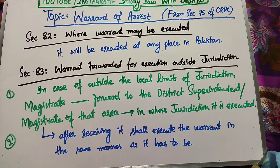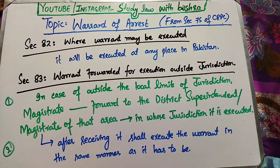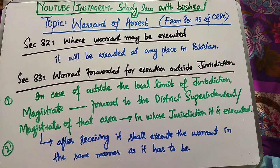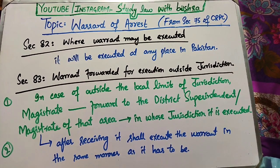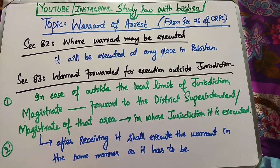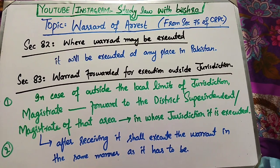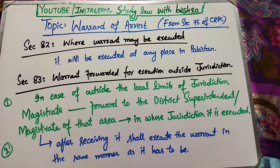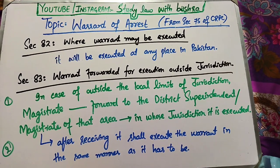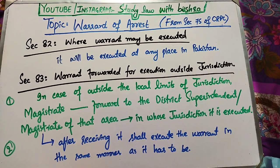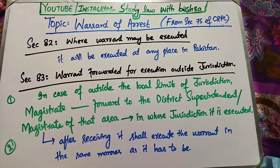Section 83 میں بتایا گیا ہے کہ اگر وہ بندہ magistrate کی jurisdiction میں نہیں ہے تو وہ magistrate اس علاقے کے district superintendent یا magistrate کو notice بھیجے گا جہاں وہ بندہ reside کر رہا ہے. وہ magistrate کو کہے گا کہ اپنے علاقے میں اس warrant کو execute کرائیں اور اس بندے کو arrest کر کے واپس بھیجیں. جیسے ہی اس magistrate کو notice ملے گا، وہ اس warrant کو اسی طرح execute کرائے گا جیسے اسے ہونا چاہیے تھا.